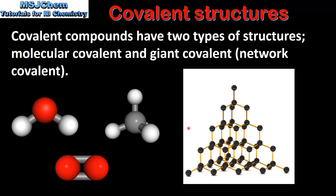On the right we have an example of a giant covalent substance which is diamond. Diamond is composed of carbon atoms which are all bonded by single covalent bonds. Giant covalent substances do not exist as individual molecules. Unlike a molecular covalent substance, the number of atoms in a giant covalent substance is not fixed — it depends on the size of the sample. The two types of covalent structures have different physical properties, which we will look at next.